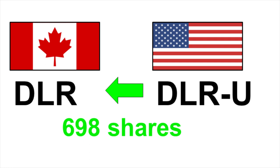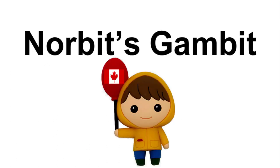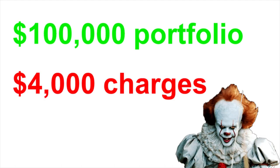The exact same thing happens in reverse if you want to convert US dollars back to Canadian. You buy DLR-U shares and then journal them back to DLR — you get the same number of shares but in the Canadian version, sell them, and cash out your Canadian dollars. Although right now you might not see a need to do Norbert Gambit, it becomes quite important as your investment portfolio grows. For instance, if your portfolio reaches $100,000 — achievable for a lot of people — doing back-and-forth currency exchanges without Norbert Gambit could cost you $4,000. That's more than most people's monthly paychecks just given away.